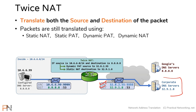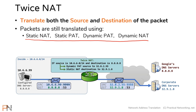This example shows us that you're changing both the source and the destination. You're doing NAT on the source and then again doing NAT on the destination — hence twice NAT. And you're doing the translations based upon the traditional mechanisms of translating packets that we've already discussed.